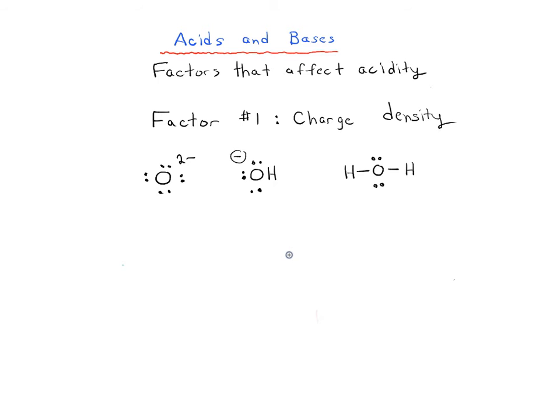So let's look at a specific example here. The number one factor, one of the most important factors to look into when thinking about whether something is going to be acidic or not, is by actually looking at the charge. And as you might expect, charge density is going to be related to the stability. The amount of negative charge you have is going to be related to its stability.